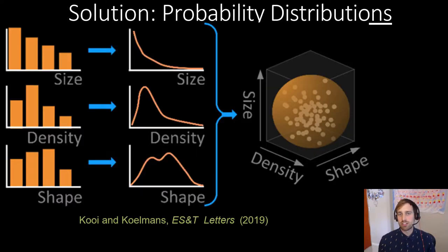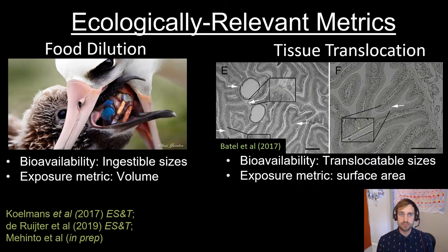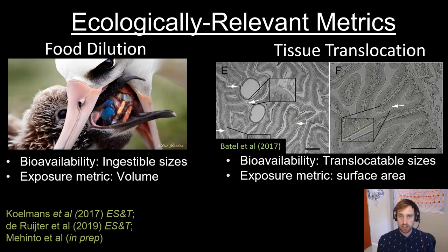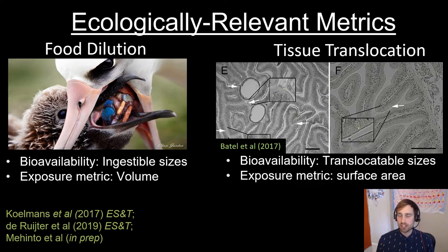Using probability distributions, we can compare effect studies done using monodispersed particle types to polydispersed environmental concentrations. To make these comparisons, it's critical that we understand the relevant exposure metric and restrict these alignments to the bioavailable particles. For food dilution, we consider only ingestible size particles and volume to be the relevant metric. For tissue translocation, only translocatable sizes are considered and surface area is considered to be the relevant metric.